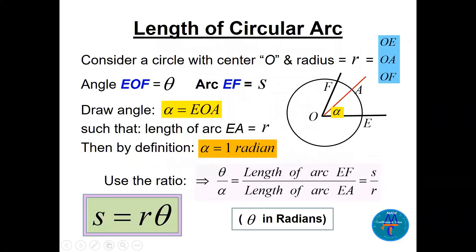Now let's see the length of a circular arc. Suppose we have a circle and an arc from E to F — let's call it s. The circle has radius r, so OE equals OA equals OF, each equal to r. The angle EOF we call theta, and alpha is the small angle EOA. We draw angle alpha such that the length of arc EA equals r.